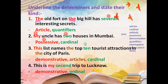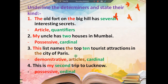The sentence: 'This list means the top ten tourist attractions in the city of Paris.' 'This' before 'list' is a demonstrative, since a noun follows. 'The' and 'the' are both articles. 'Ten' is a cardinal — no position indicated, just quantity. 'My trip' — 'my' is possessive. 'Second trip' — 'second' tells the position of the trip, so it is an ordinal.